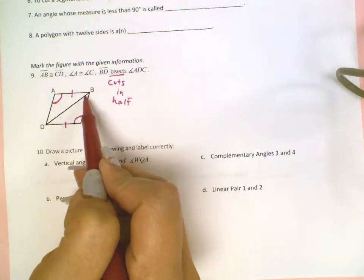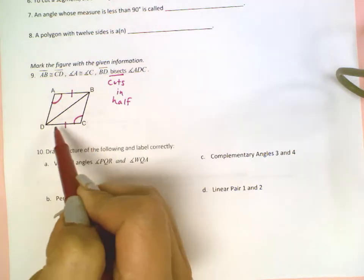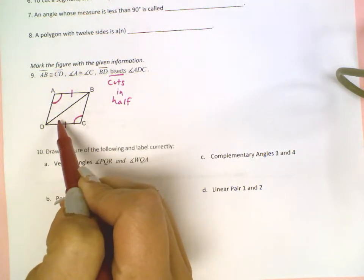So if BD, which is this segment right here, cuts angle ADC in half, that means that half is over here and half is over here.